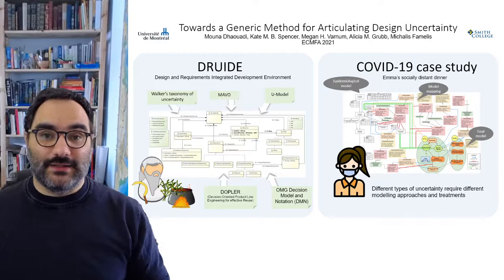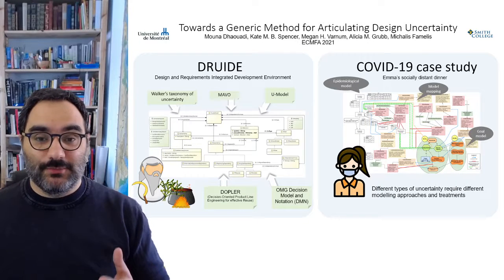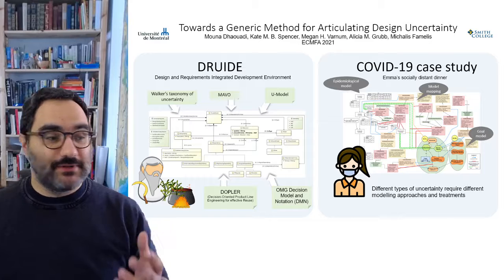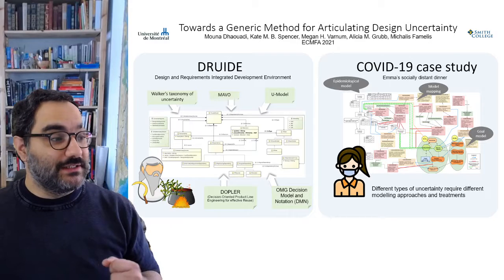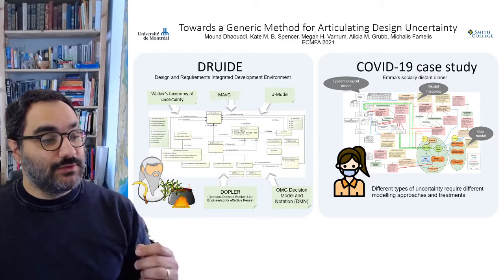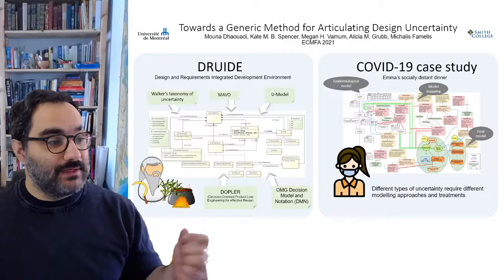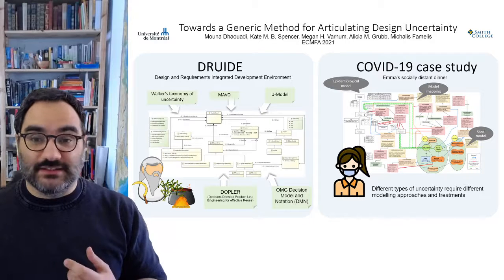Hello, I am Michalis Famelis and in this paper I'm going to talk to you about the ECMFA 2021 paper towards a generic method for articulating design uncertainty. It was co-authored by Munad Awadi, Kate Spencer, Megan Varnum, Alicia Groob and myself.